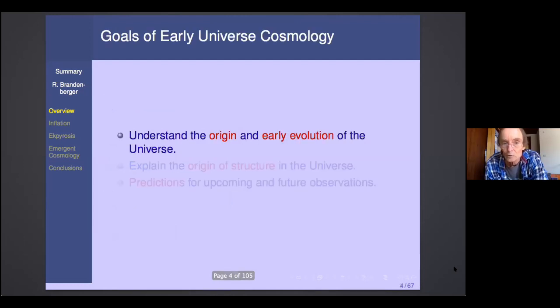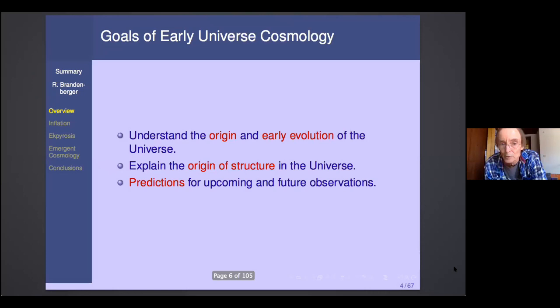So let me start with the goals of early universe cosmology, because I think it's important to keep this in mind. We want to understand the origin and early evolution of the universe. Now we have lots of data, and we would also like to explain the origin of the structure that we see in the universe. But as physicists, we would also like to make predictions for upcoming and future observations, predictions with which our models can be falsified.